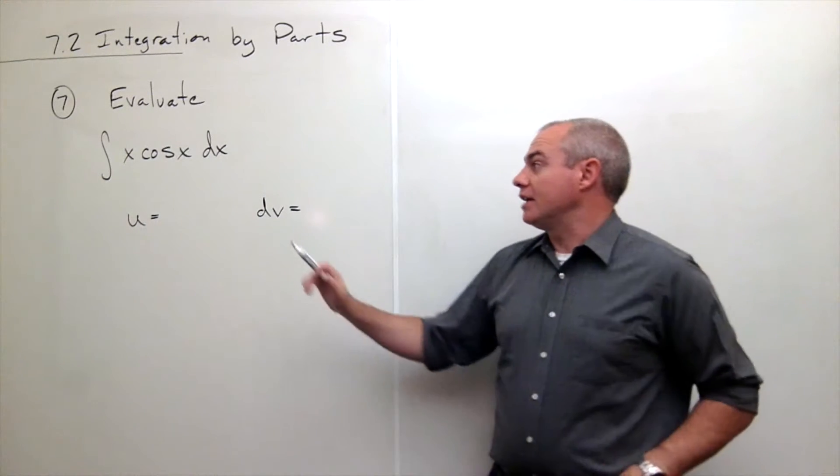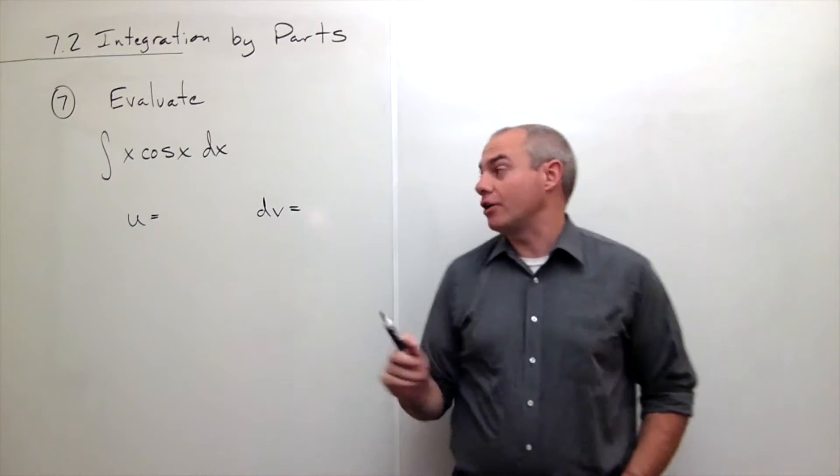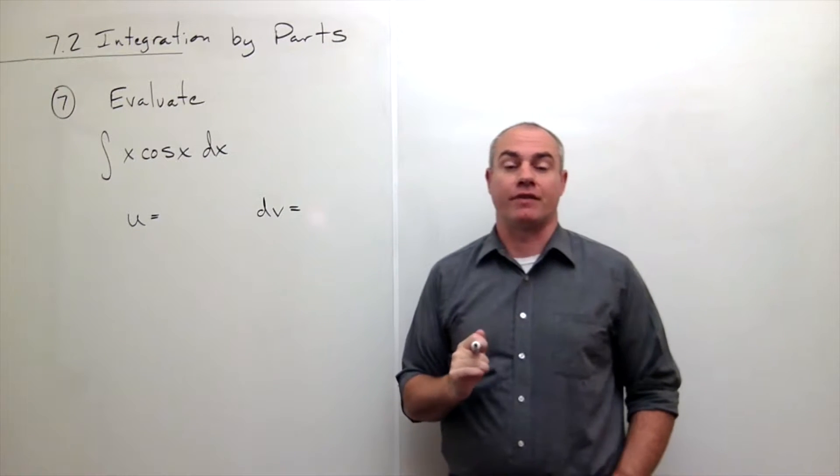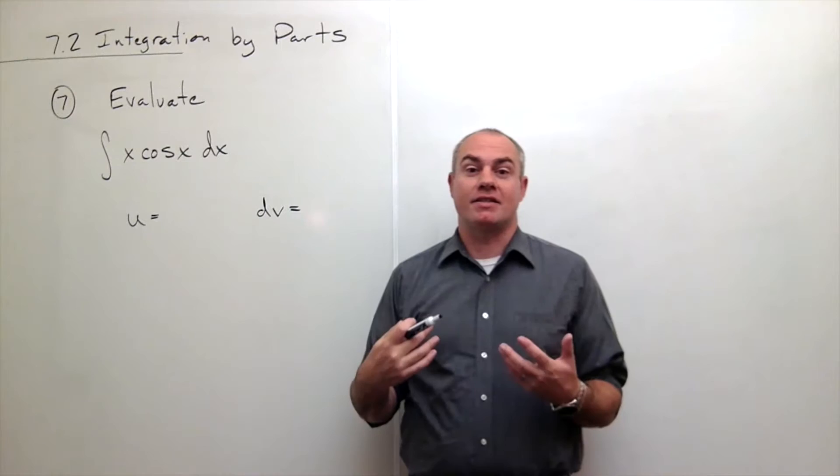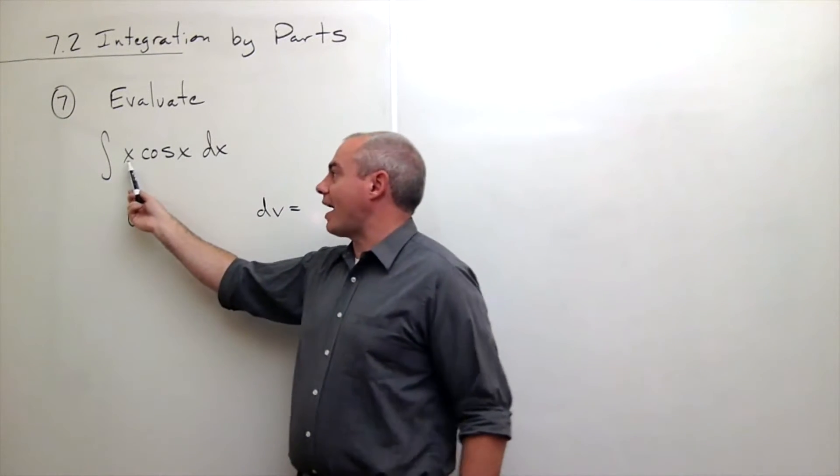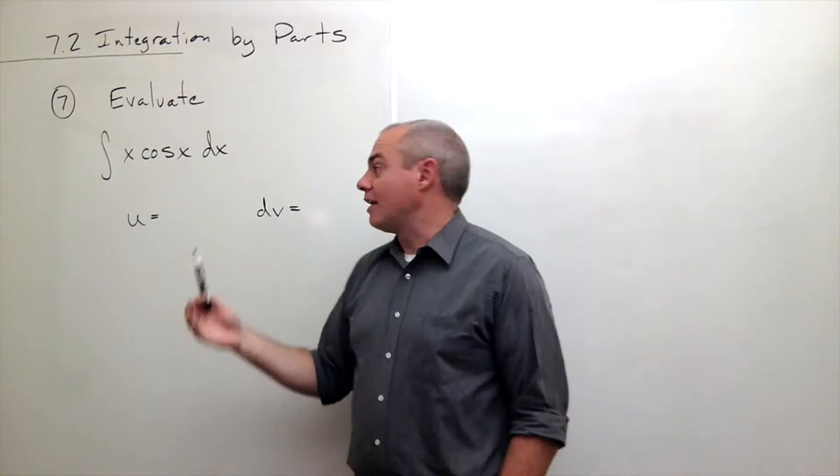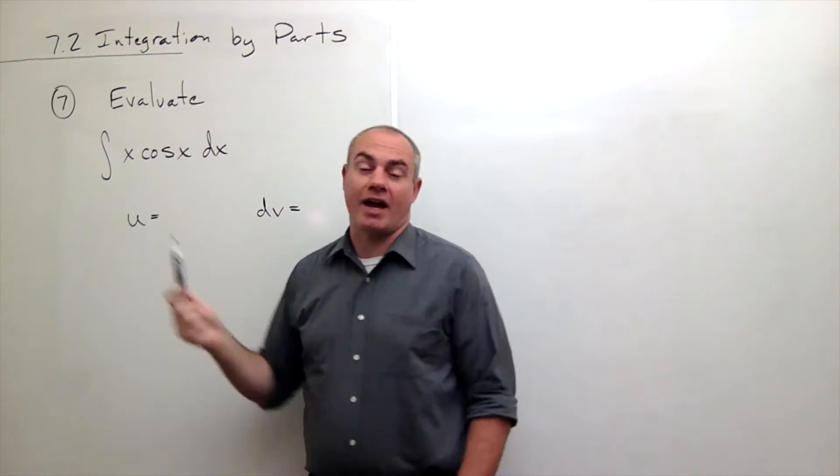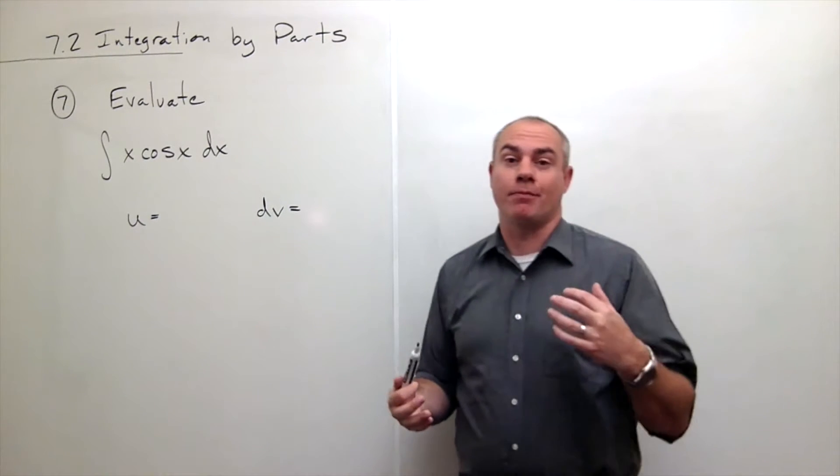Now in this case I have an x and a cosine of x, both of which I know how to take their derivative and their antiderivative. So then what I'm looking to do is say, can I make it simpler? If I take the derivative of x, I get 1, that's simpler than x. If I take the antiderivative of x, I get one half x squared, which is more complicated.